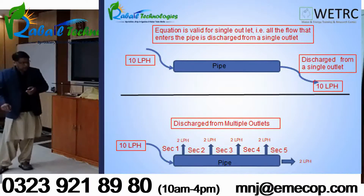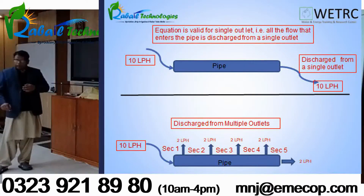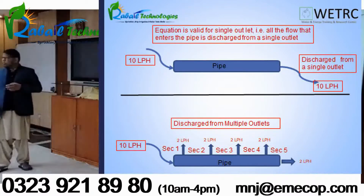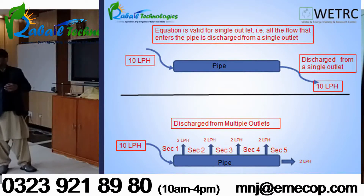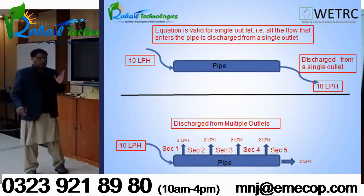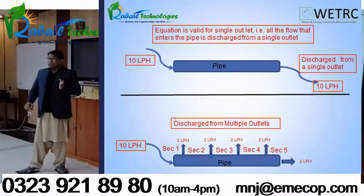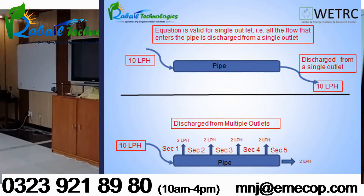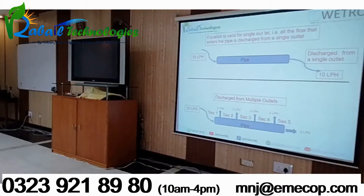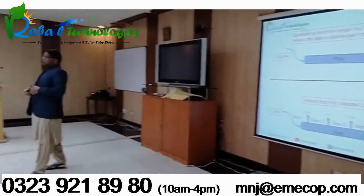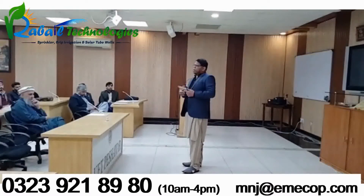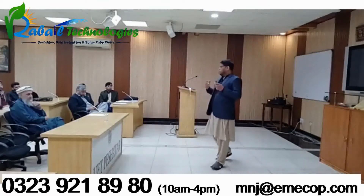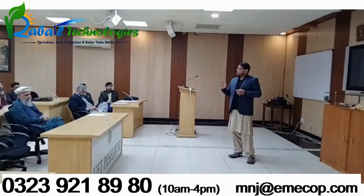There are two methods to handle this. Method one is to apply Hazen-William separately for each section: section 1 with 10 LPH and its length, section 2 with 8 LPH, section 3 with 6 LPH, section 4 with 4 LPH, and section 5 with 2 LPH — then add all results. This is very laborious. In drip irrigation, a sub-main might be 100–200 meters long with outlets every 6 meters, meaning around 33–34 sections to calculate separately.